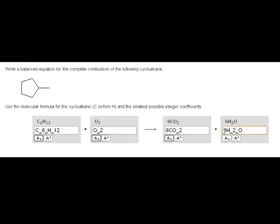So let's count the oxygens. So there appears to be 12 and 6, which would be 18 oxygens on the right. And that means I need to put a nine in front of the O2.